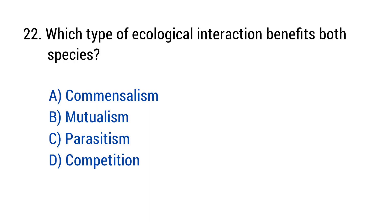Question number 22. Which type of ecological interaction benefits both species? The right answer is option B: Mutualism.